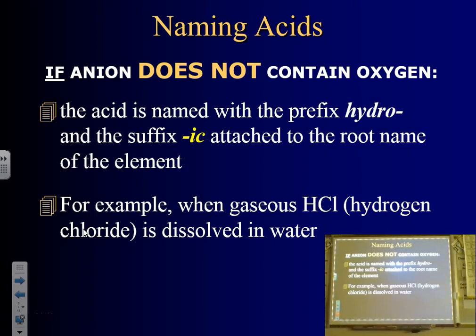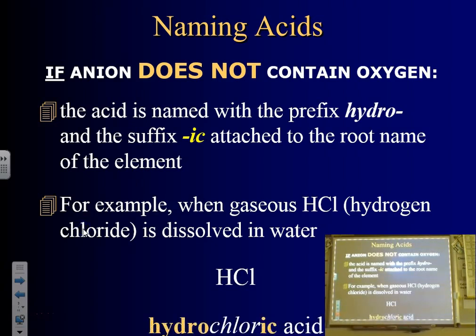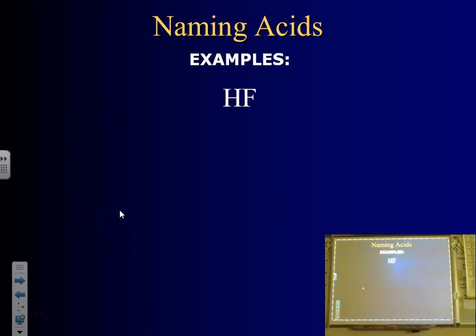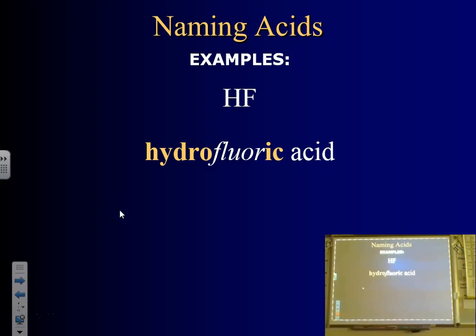If you see an oxygen, don't even think about putting 'hydro' in there. So HCl is hydrochloric acid. What would we call HF? Hydrofluoric — you have fluorine, get rid of the -ene and put -ic, and since there's no oxygen, add hydro. Hydrofluoric acid.